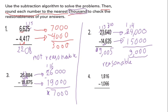Now do the algorithm subtraction. 4 minus 5 — can't be. 8 becomes 7 and 4 becomes 14. From 5 to 14: after 5 — 6, 7, 8, 9, 10, 11, 12, 13, 14 — that's 9. Seven minus 7 equals zero. Eight minus 8 equals zero. 5 minus 8 can't be: 2 becomes 1 and 5 becomes 15. Fifteen minus 8: after 8 — 9, 10, 11, 12, 13, 14, 15 — that's 7. Here is zero, cancel. Accurate answer: seven thousand nine. Rounding answer: seven thousand. So it is reasonable.